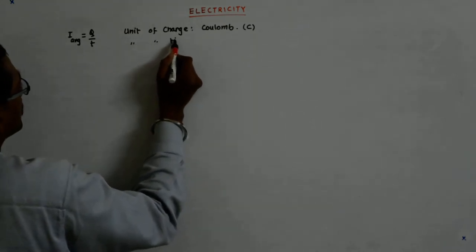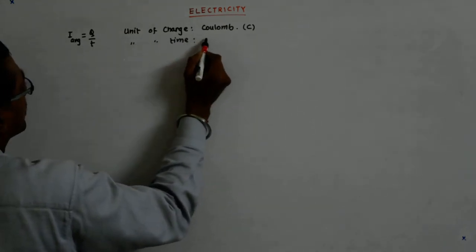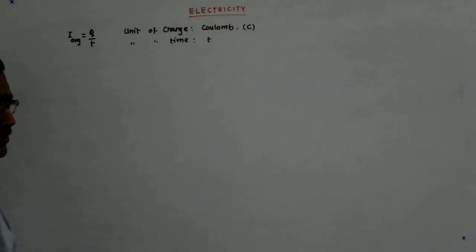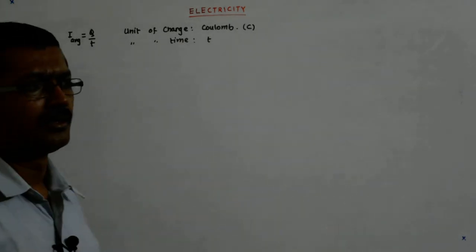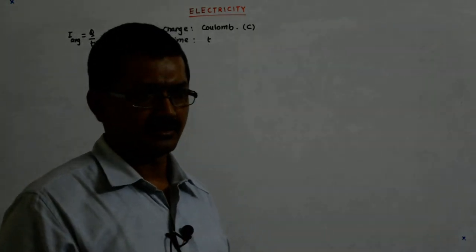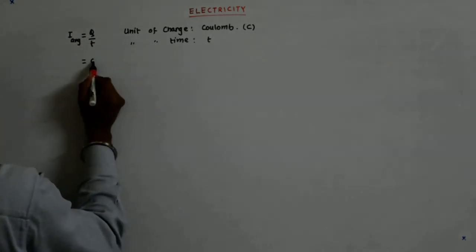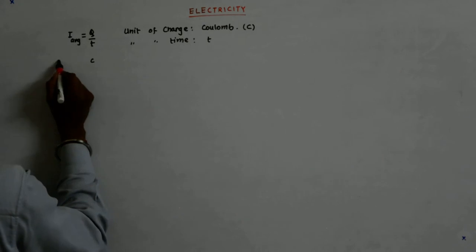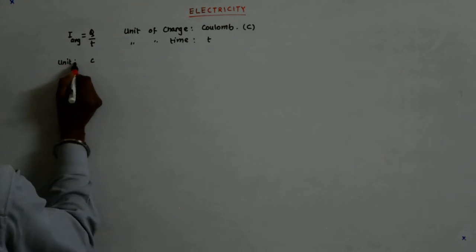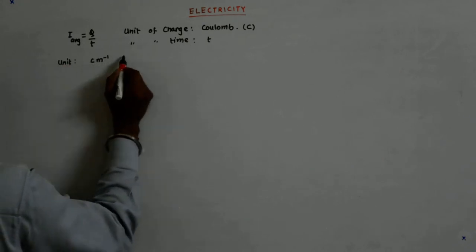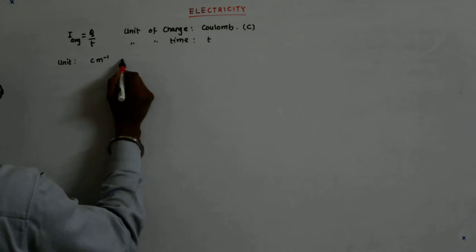And time, unit of time was t. It is not on someone's name, rather it is a symbol, so it is written as a small letter. And we had seen that this is equal to coulomb, the unit is coulomb per meter.